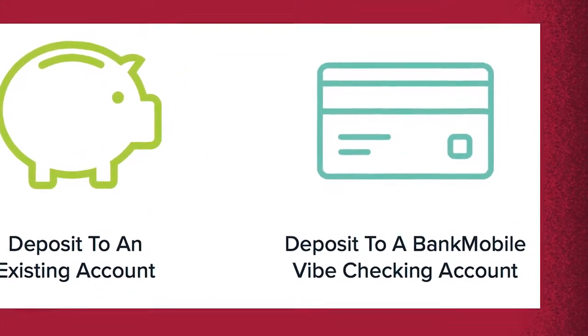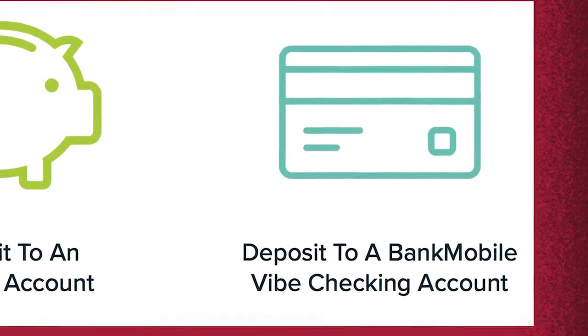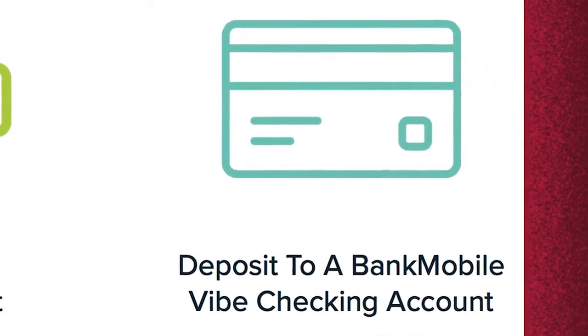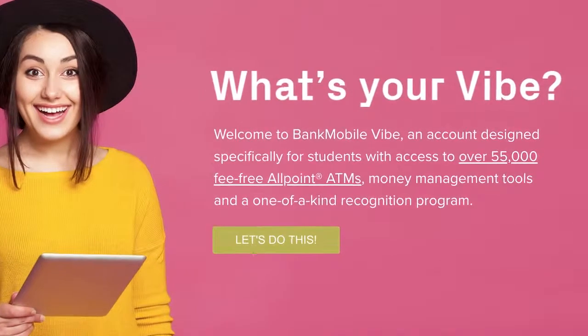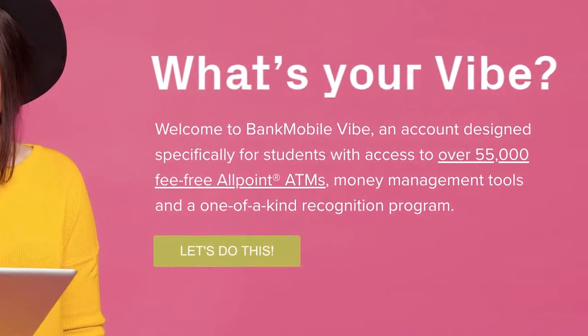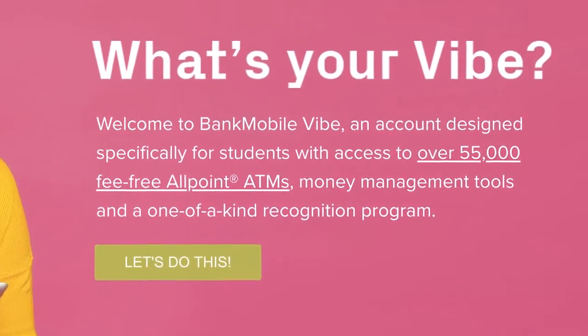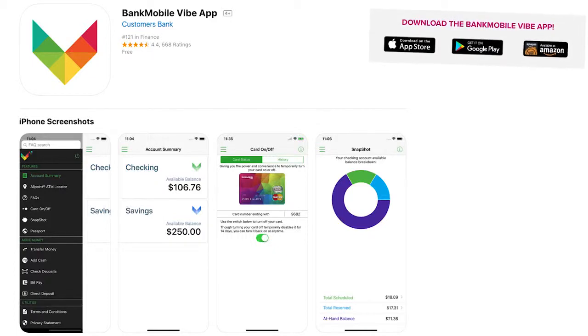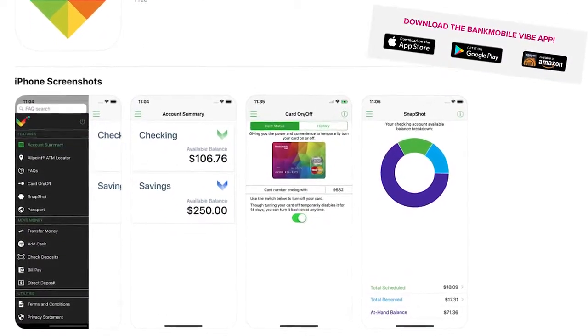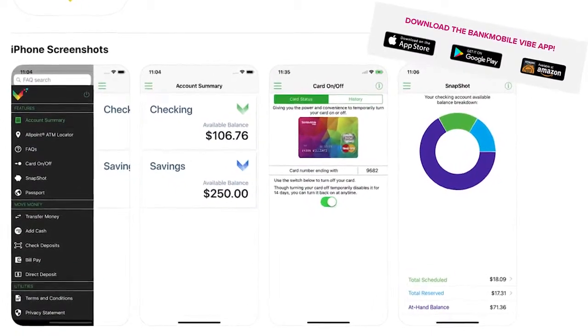The second option is to open a Bank Mobile Vibe account. That's a genuine bank account — it's not on the corner like Chase and Fifth Third, it's more like a virtual bank account. They'll send you a debit card, and you have access to all the bank features that you would at any other bank account. You'll use all-point ATMs to withdraw your money. The advantage of the Vibe account is if you need your refund fast, you will have your refund on the same day that UND releases the funds.